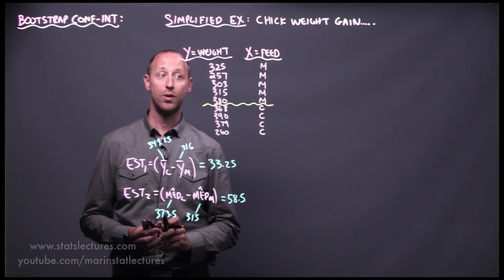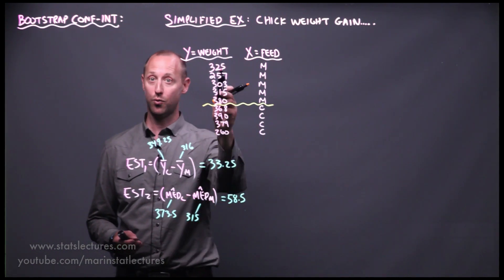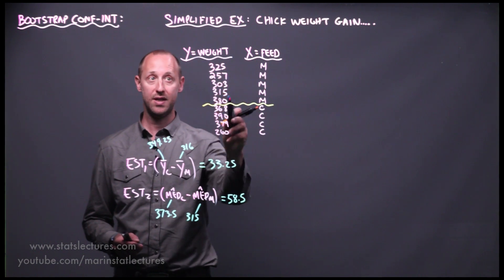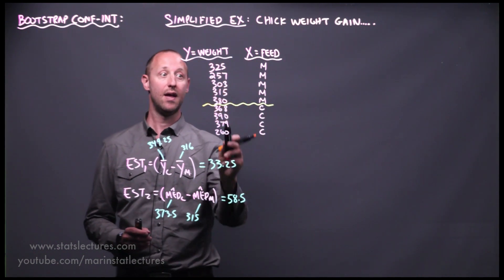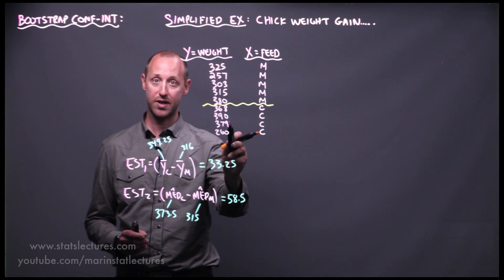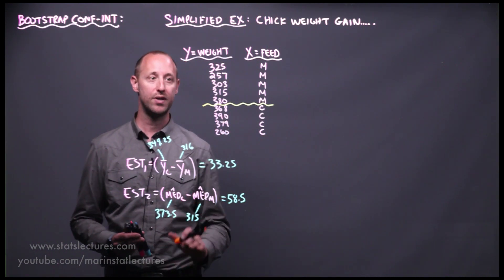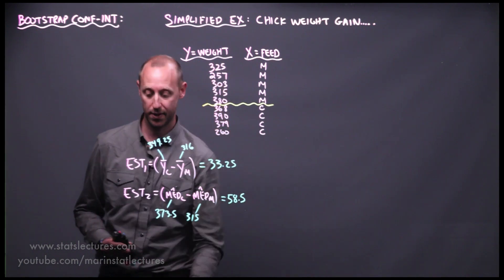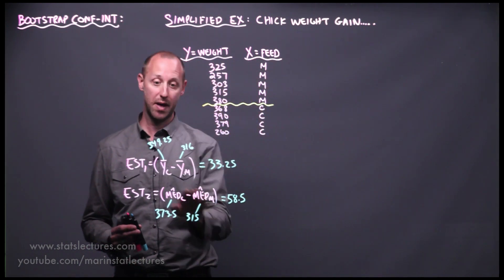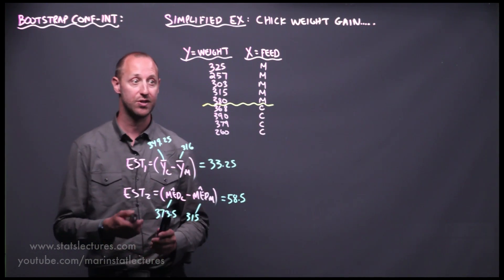When we use this bootstrapping approach, we're going to randomly sample with replacement five observations from within the meat meal group, and randomly sample with replacement four observations from the casein group. We keep these two groups separate because we're allowing for the idea that meat meal and casein may be different when building the estimate and confidence interval.